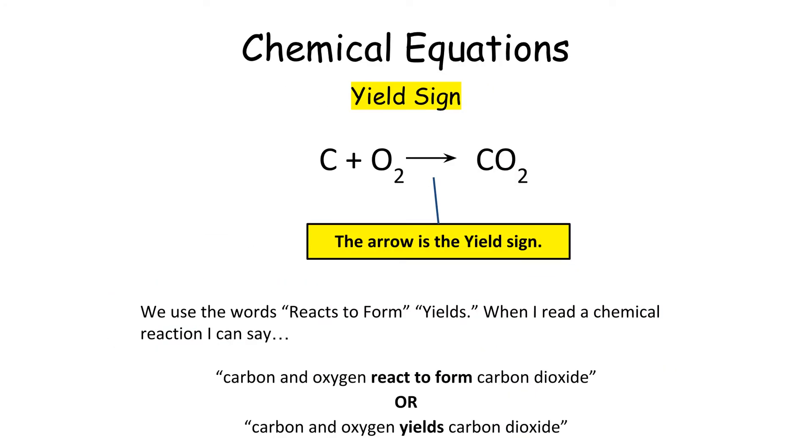The yield sign. So we use the words reacts to form or yields. When I read a chemical equation, I can say carbon and oxygen reacts to form carbon dioxide. Or I can say carbon and oxygen yields carbon dioxide. We never say carbon and oxygen equals carbon dioxide. We always say either reacts to form or yields.